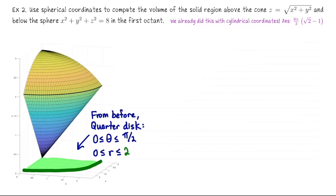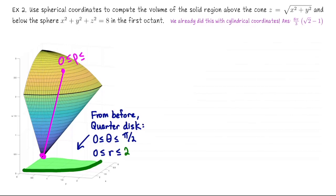This is a solid object — like a quarter of a solid ice cream cone. Rho is the distance from any point in the region to the origin. Starting at the origin, the farthest we can go lands on the sphere x squared plus y squared plus z squared equals 8, which is rho squared equals 8. That longest line segment tells us rho is bounded between zero and the square root of eight. So we have two of our spherical coordinates; now we need phi.